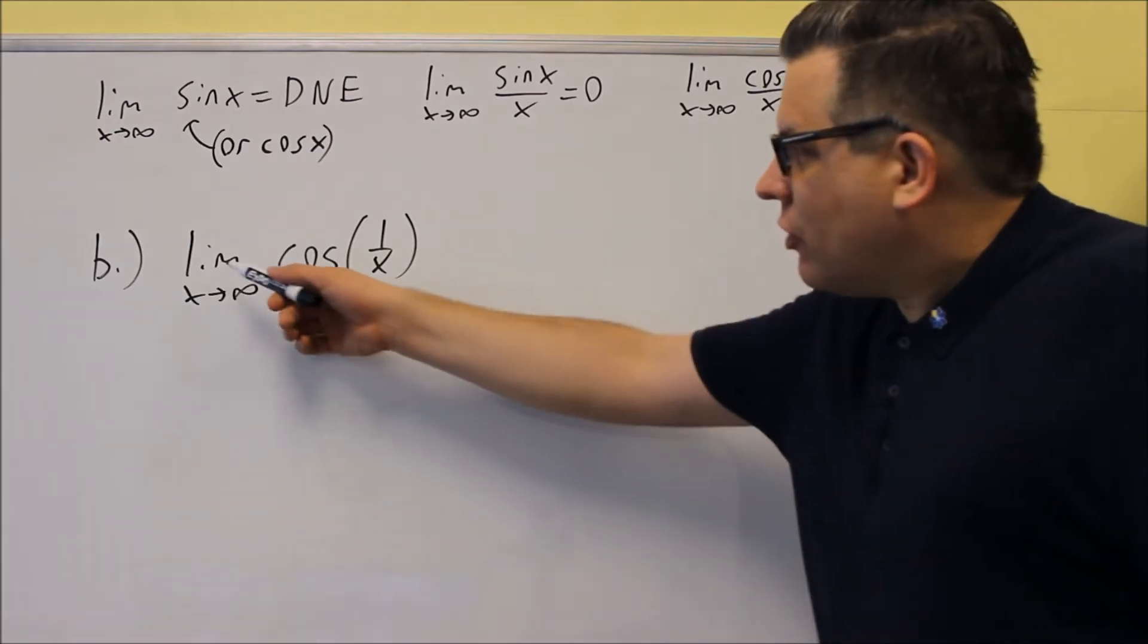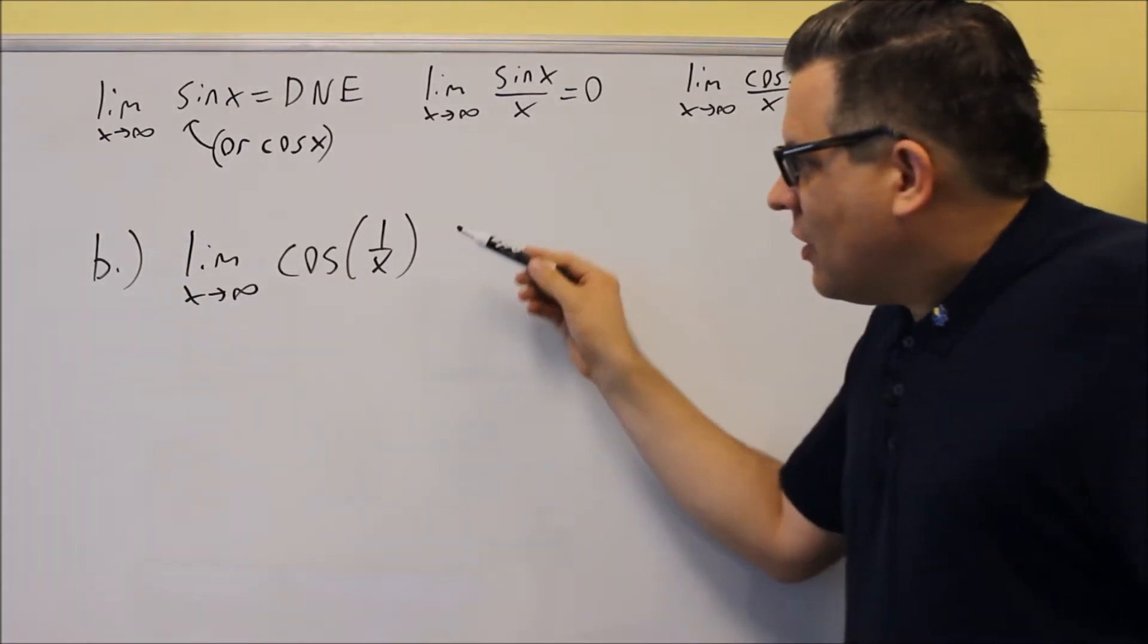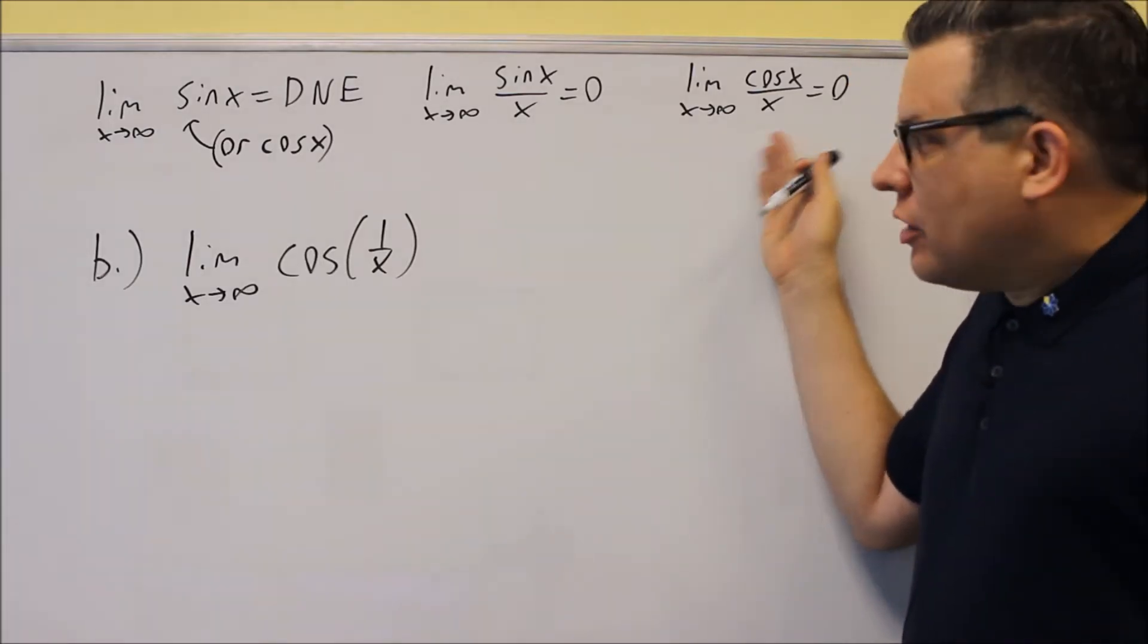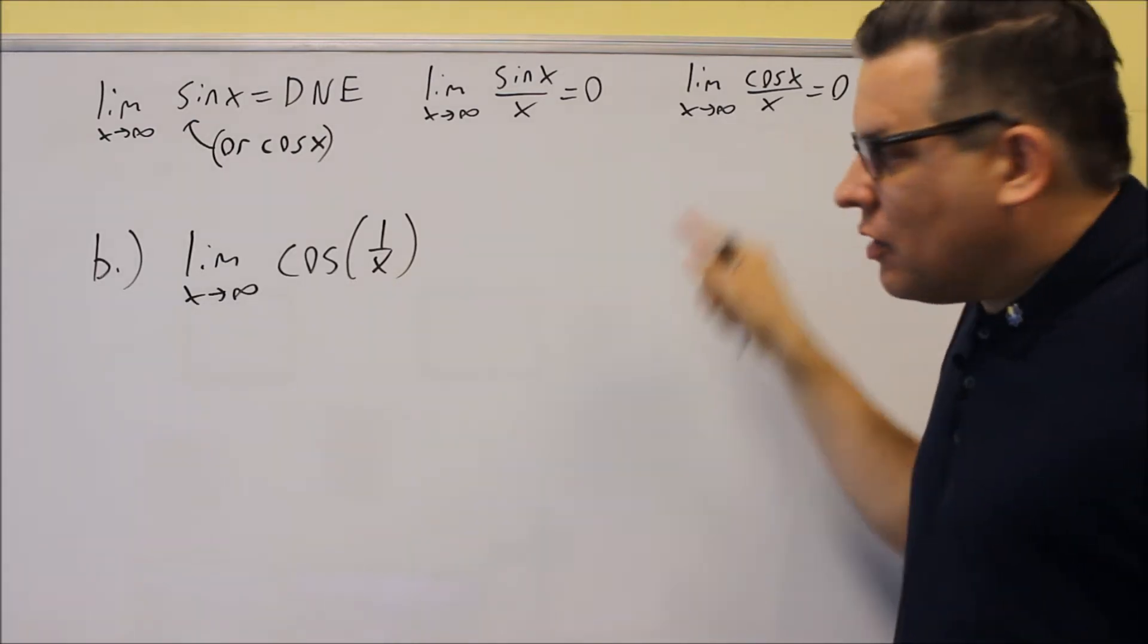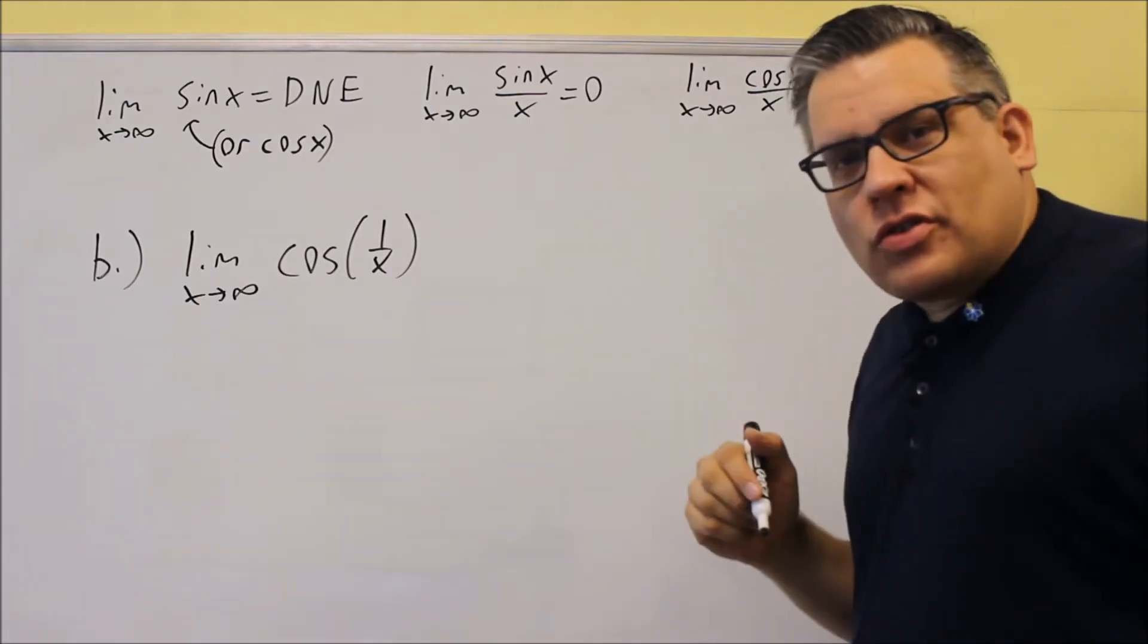Okay, for part B, we have limit as x approaches infinity, cosine 1 over x. So this is not going to be our special limit that we have here because the x is inside of the cosine. It's not down below like we have here. Okay, so this is going to be done differently than the previous example.